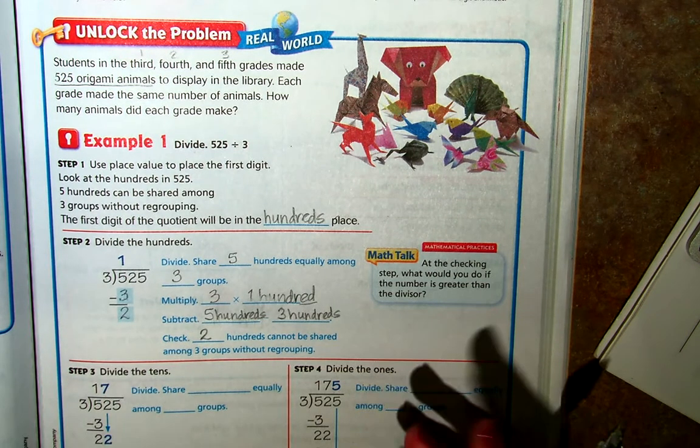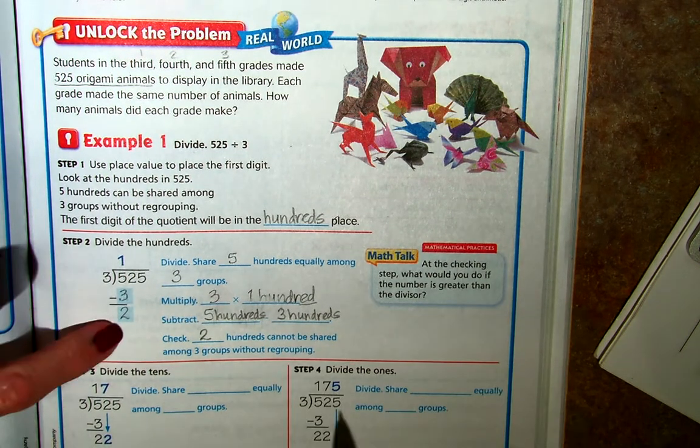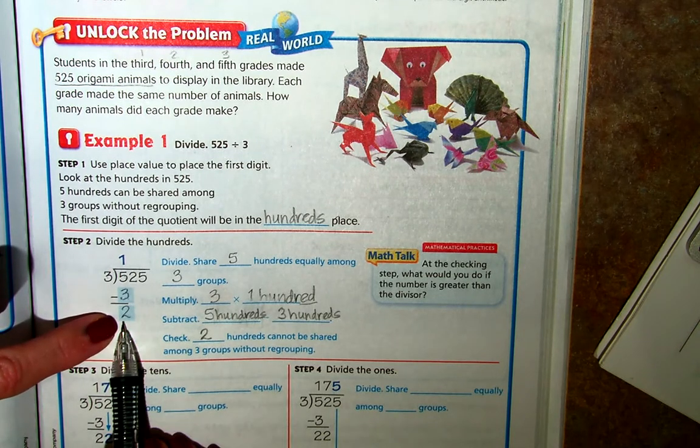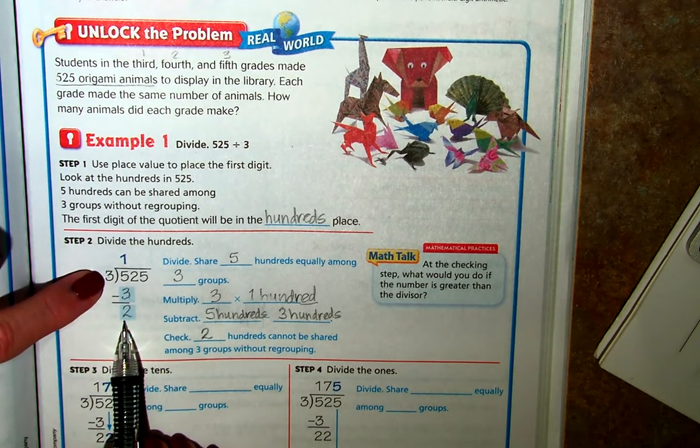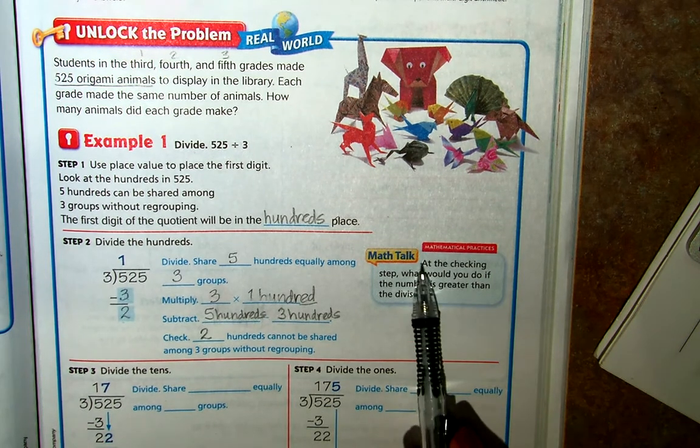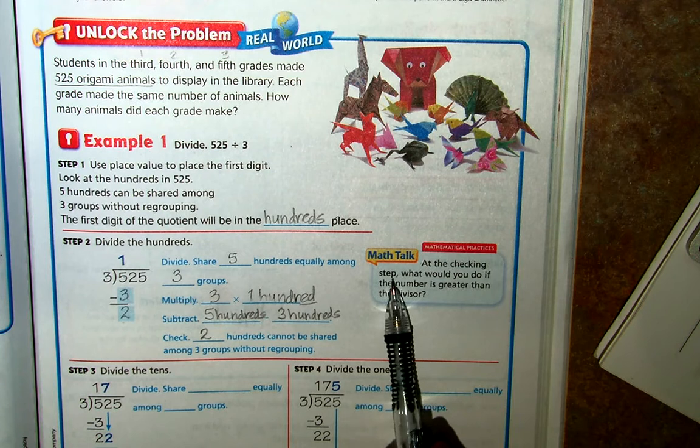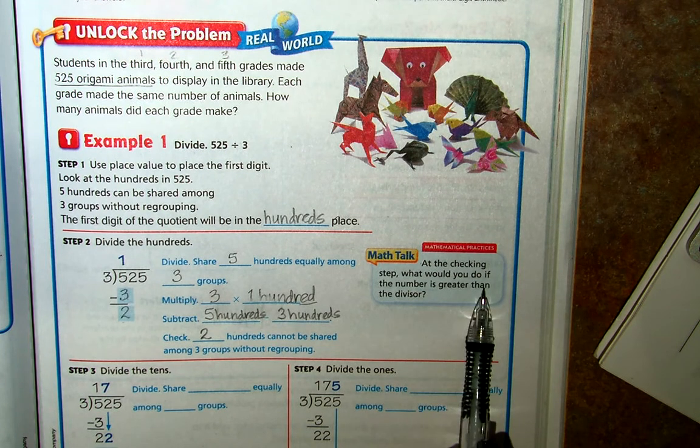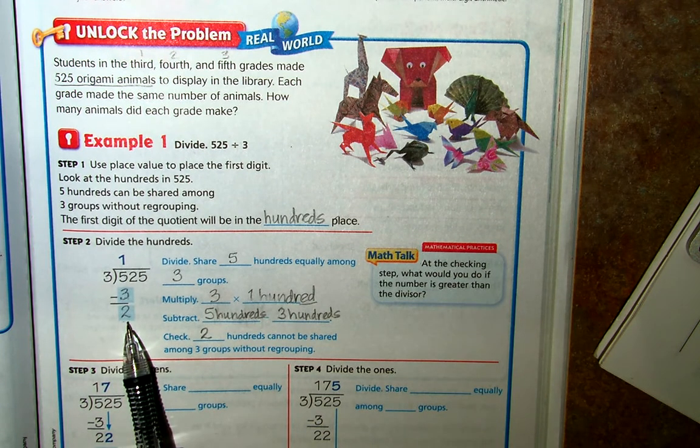So we know that we have two hundreds left, and we know that two hundreds cannot be shared among three groups without us doing some regrouping. And so as long as this number is smaller than our divisor, we're good to keep going. So over here, there's a math talk question. At the checking step, what would you do if the number, if this number was greater than the divisor?